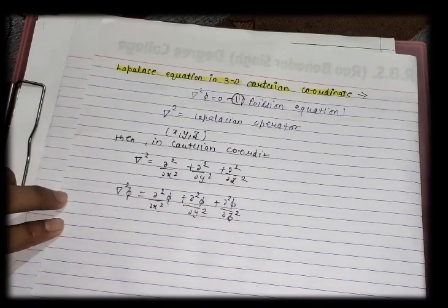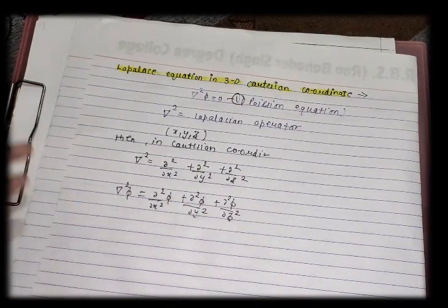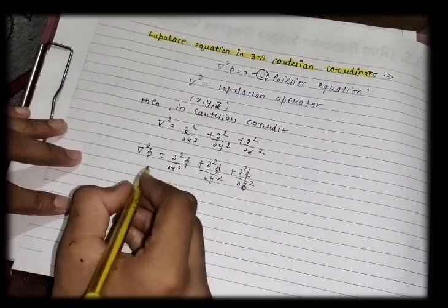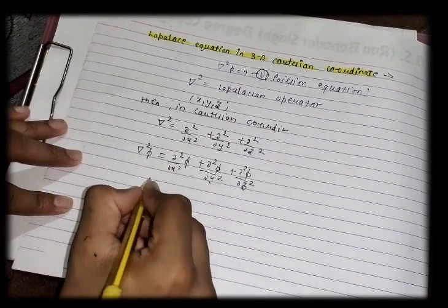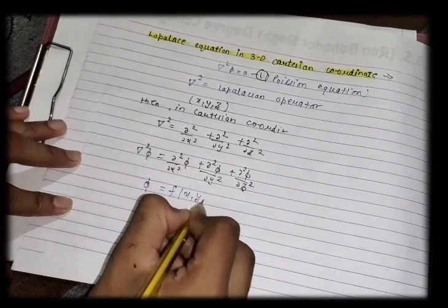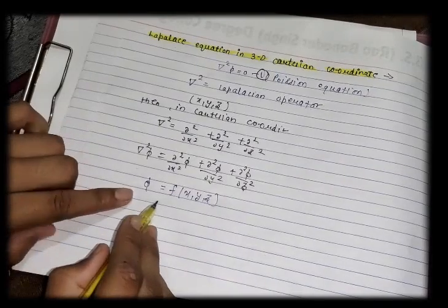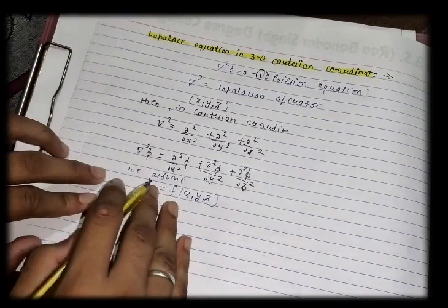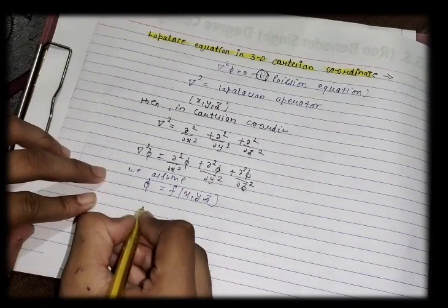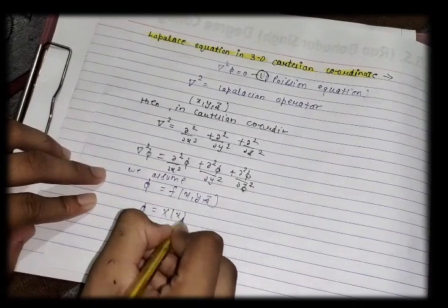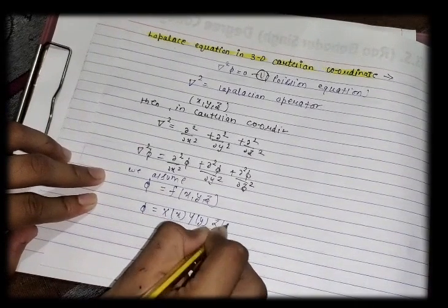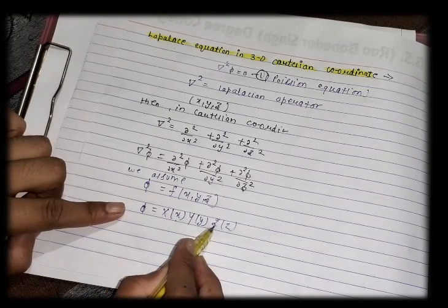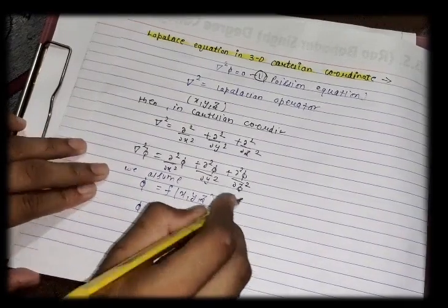To find the solution of this equation, we assume that phi is a function of x, y, and z. We write phi as the product phi = X(x)·Y(y)·Z(z), where X is only a function of x, Y is only a function of y, and Z is only a function of z. This is equation number 2.